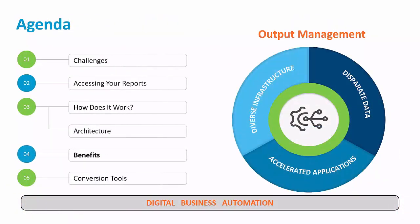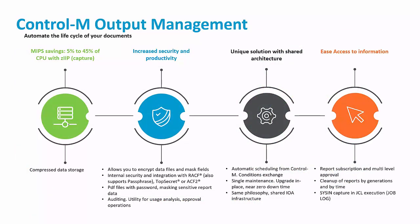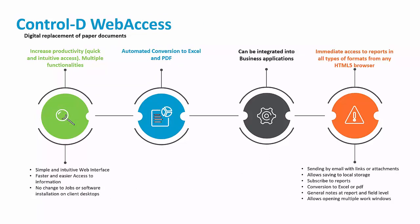Now let's talk about benefits. Control-D provides easy access to information and facilitates the automatic management of company documents, allowing us to increase productivity and improve the security of our information. It also helps save CPU and storage costs using specialty processors on the mainframe and compressing stored data. Control-D web facilitates and simplifies access by providing an easy, intuitive interface for all users, helping them in their daily work with multiple functions.